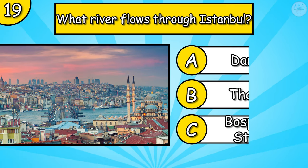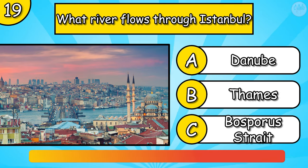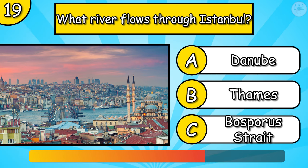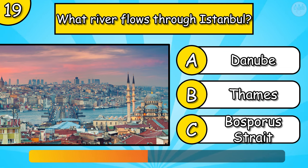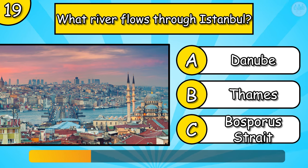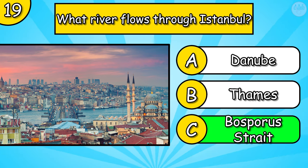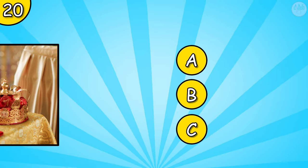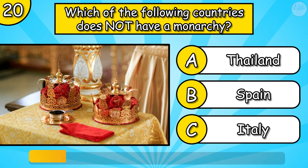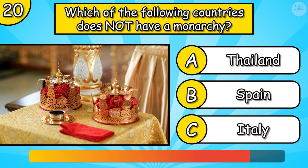Which river flows through Istanbul? Which of the following countries doesn't have a monarchy?